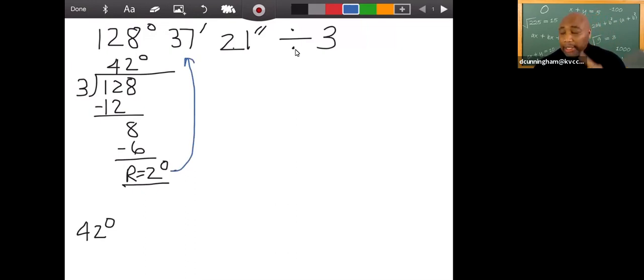Now, remember, one degree is equal to 60 minutes. So two degrees would equal 120 minutes. So one degree is equal to 60 minutes, or two degrees will equal 120 minutes. So I'm going to add 120, that remainder, to 37. That's what I'm going to do.